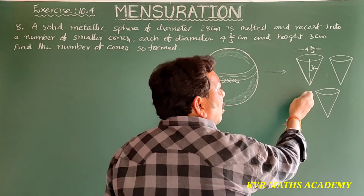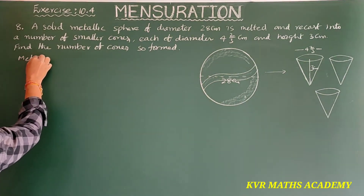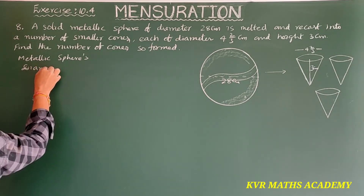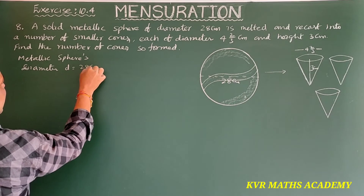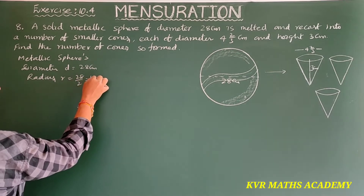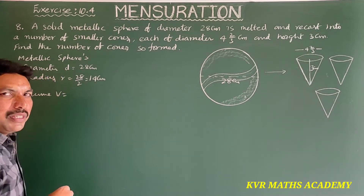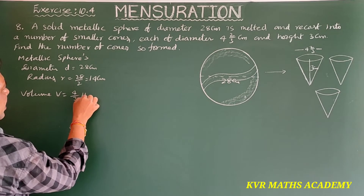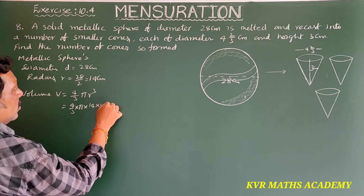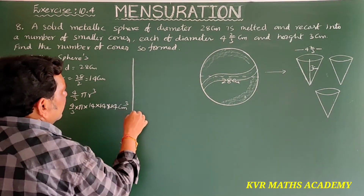A metallic sphere of diameter 28 centimeters is melted and recast to form a number of smaller cones of height 3 centimeters and diameter 4⅔ centimeters. Volume of the metallic sphere is equal to the volume of the number of cones. For the metallic sphere: diameter d = 28 centimeters, so radius r = 14 centimeters. Volume v = 4/3 × π × 14³ centimeter cube.